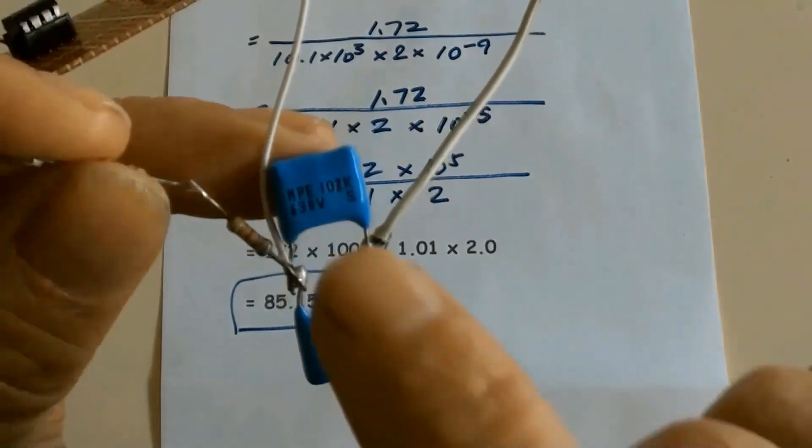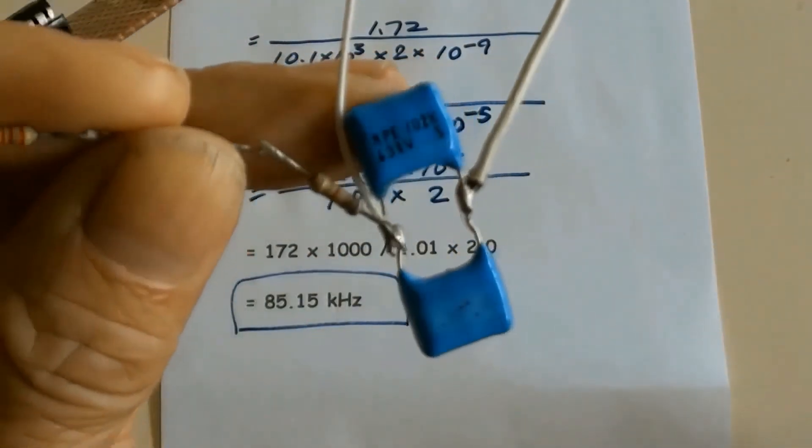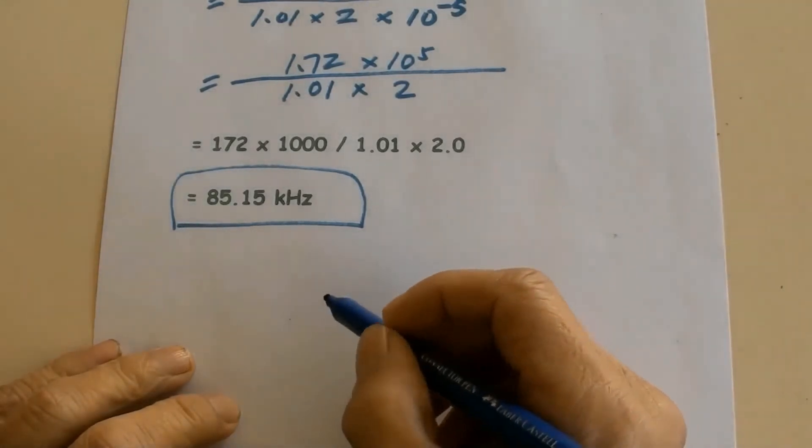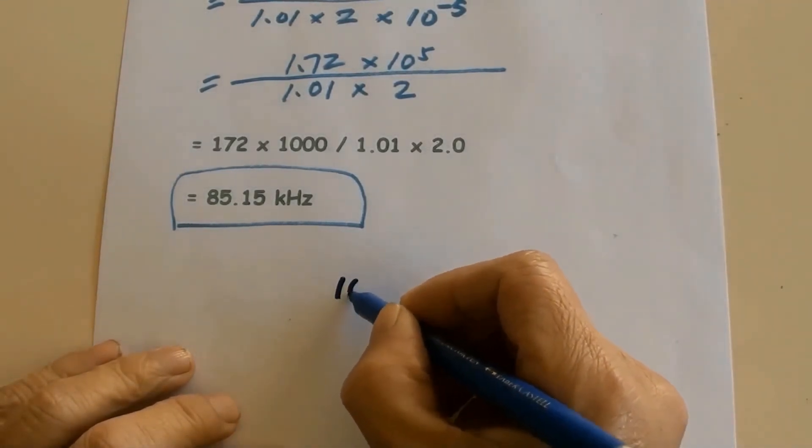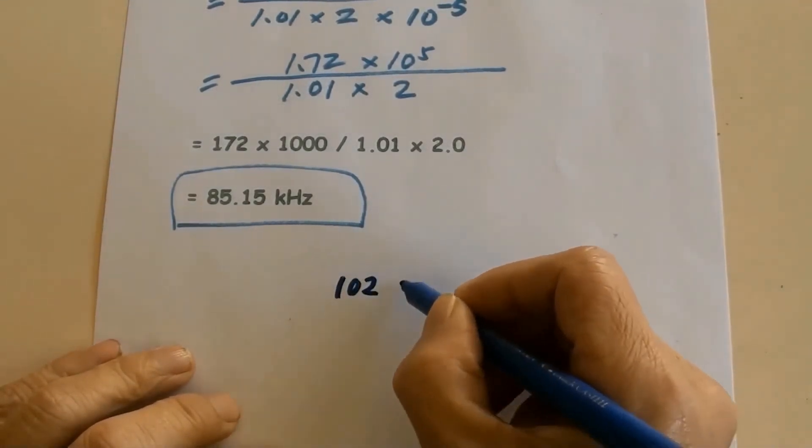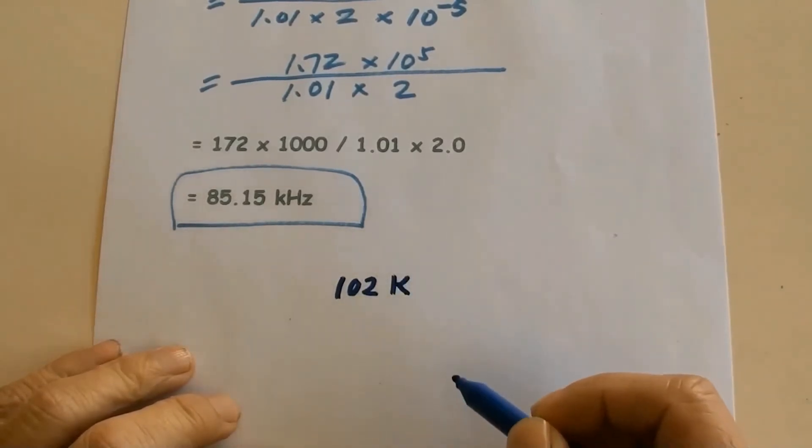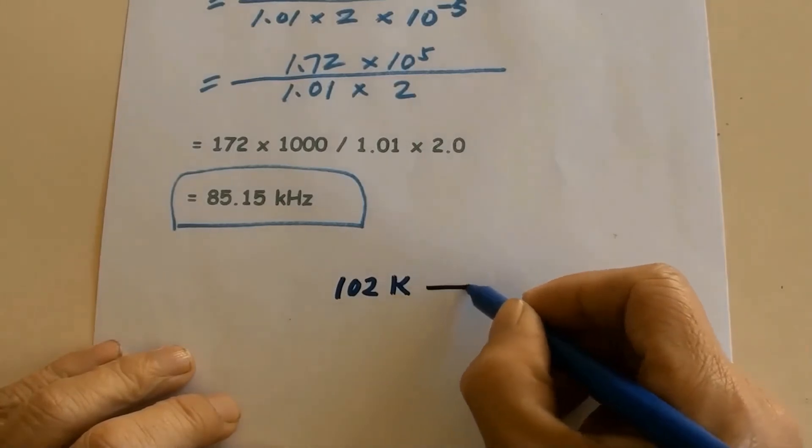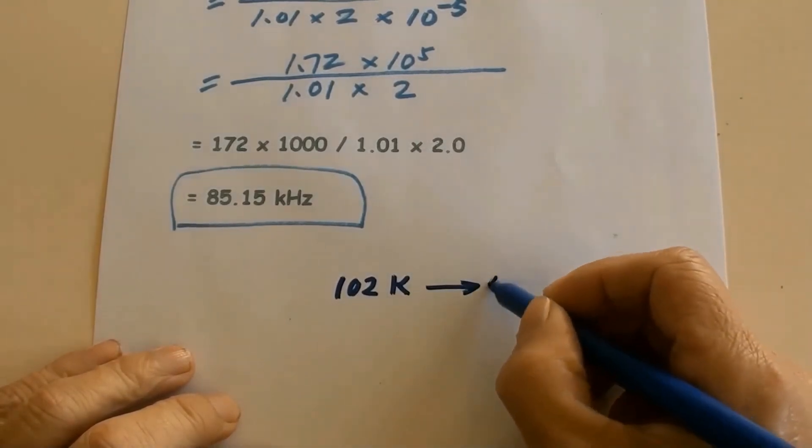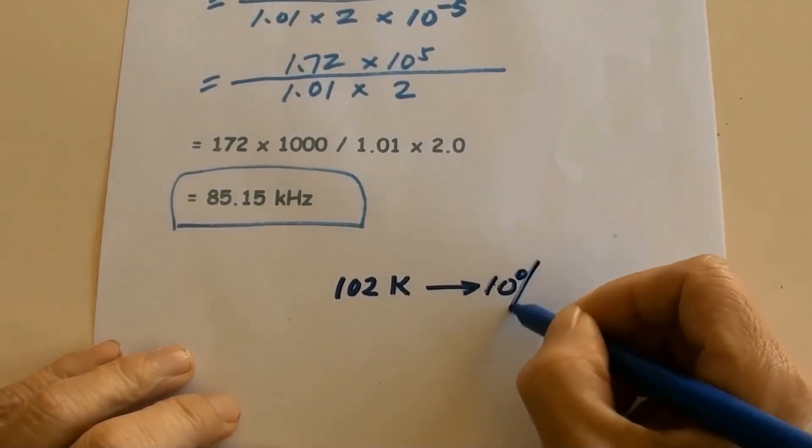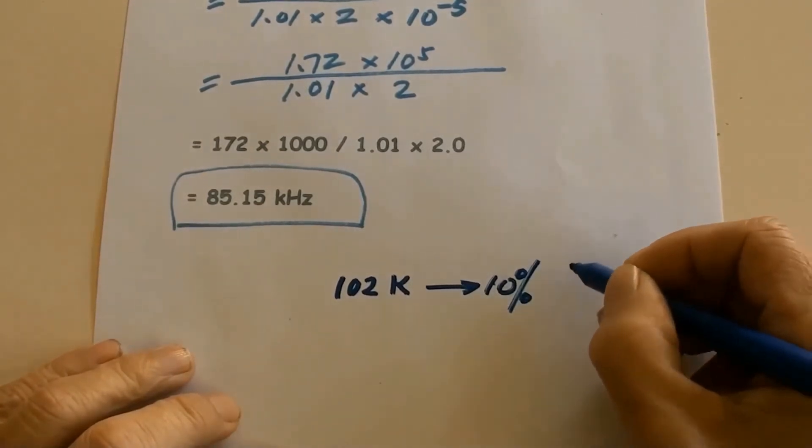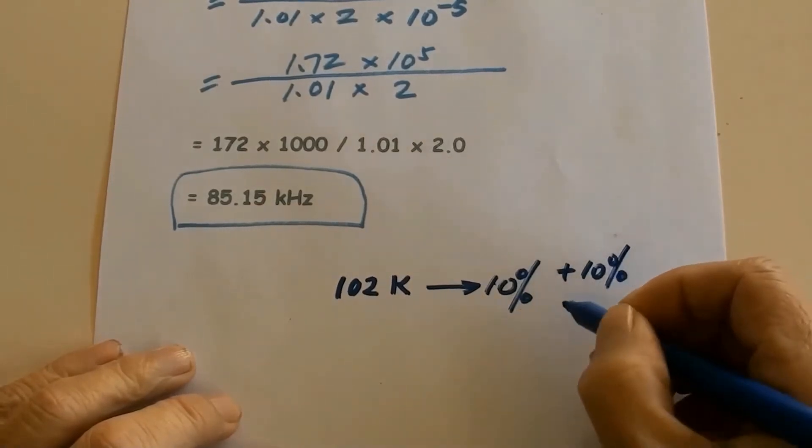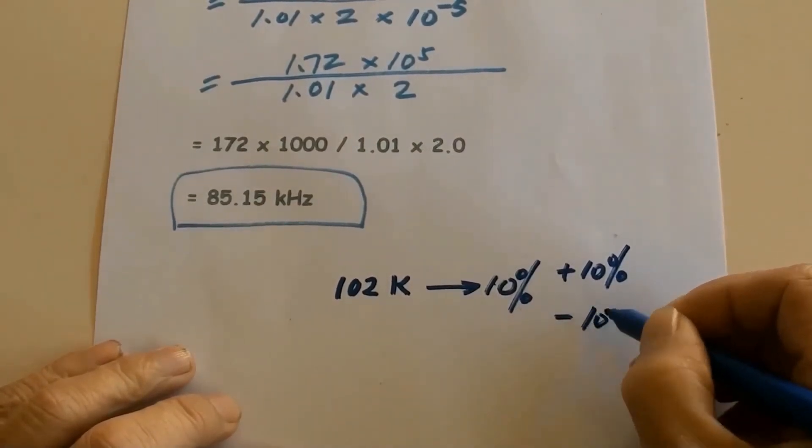The marking on the capacitor is 102k. Last letter k means the tolerance for that capacitor's value, which is 10%. It can be 10% more, or 10% less value of the capacitor.